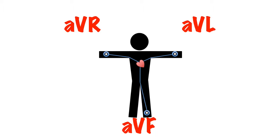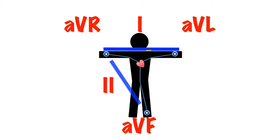You may have heard of Einthoven's triangle. Its details are beyond the scope of this talk, but essentially you can create three further virtual leads. Lead one, by combining the information from AVR and AVL. Lead two, by combining the information from AVR and AVF. And lead three, by combining the information from AVL and AVF.